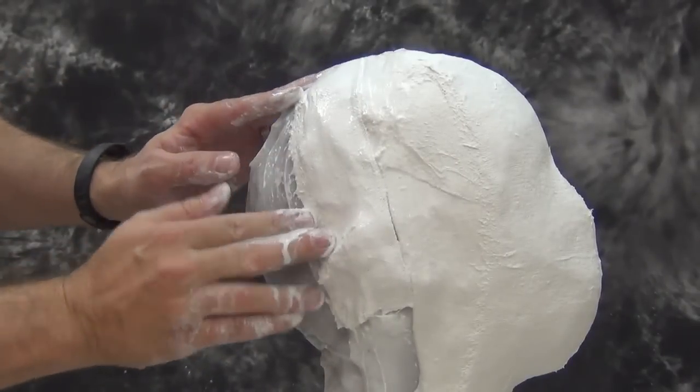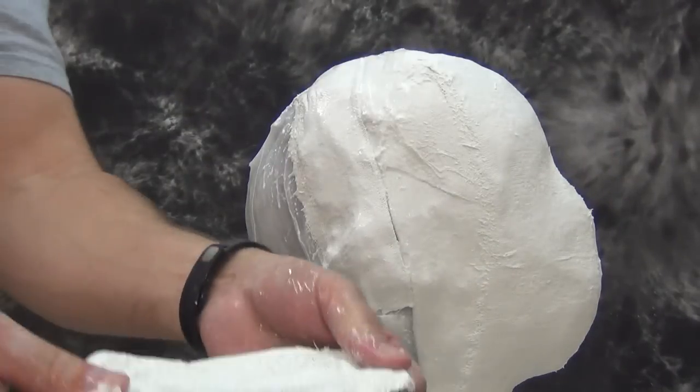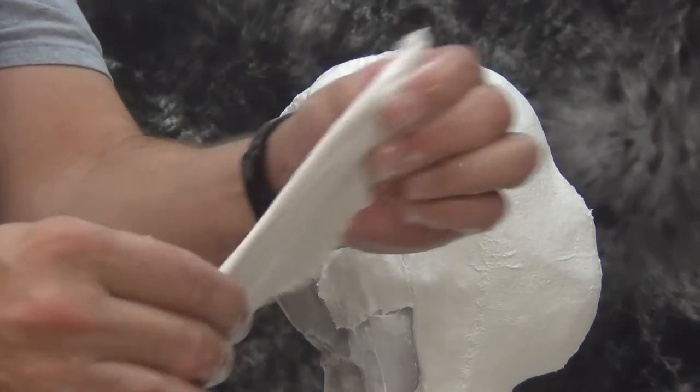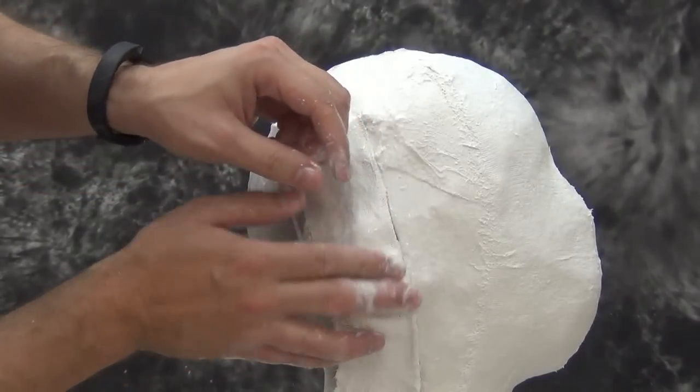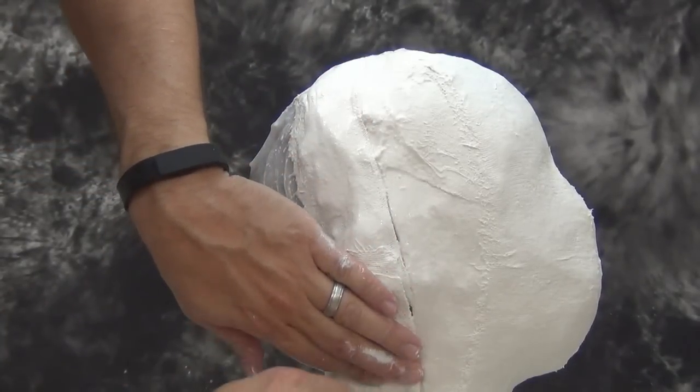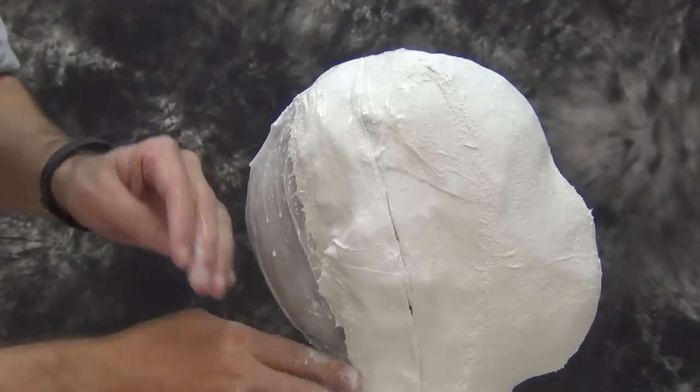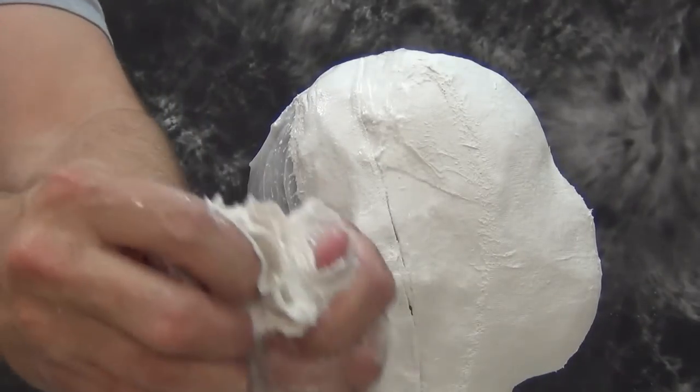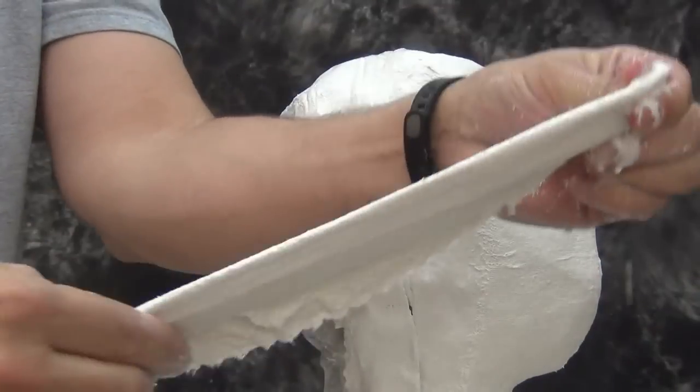If you followed some of our life casting videos, you've noticed sometimes we make one long seam bandage and that's okay, whichever approach works best for you, whether you use short bandages or long bandages for your seam. Either way, you want to make sure that you have that nice defined edge and you push that folded edge right up against that released edge that you created with the Vaseline on the first half.